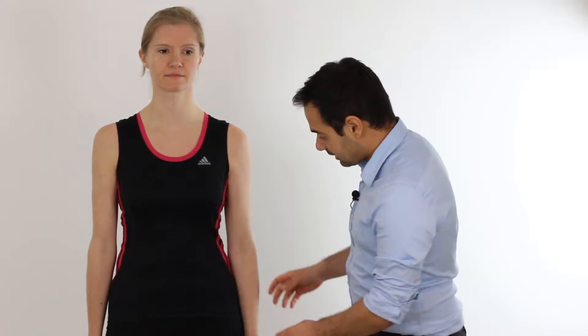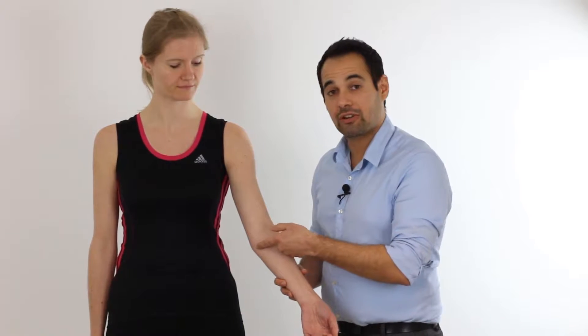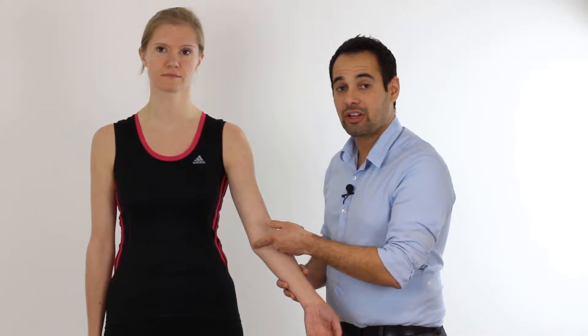In today's video we're going to be taking you through the medial epicondylitis stress test. As you can guess from the name, it's designed to test for medial epicondylitis, also known as golfer's elbow, which is a tendinopathy of the common wrist and finger flexor tendon located just distal to the medial epicondyle of the elbow joint.